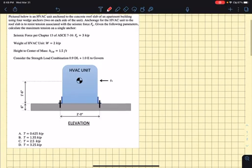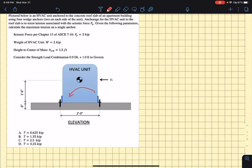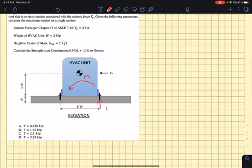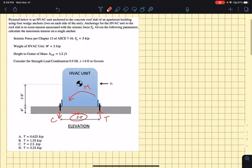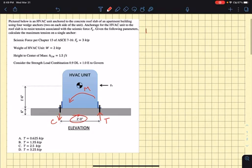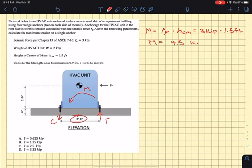So getting into it, this problem is fairly straightforward. We've got a moment here at the base, moment M, and that moment is due to that force F_p. That moment is going to result in a couple, which is going to be a tension and a compression on the other side. We're worried about the tension because the tension is what's going to pull up on the anchorage. We can calculate the tension using the lever arm here, d, the distance between the anchorage. But we've got to also account for the weight because the weight is going to help us out a little bit on the tension. So we're going to go ahead and calculate that moment. We've got that moment as equal to F_p times H_cm, height to the center of mass. It's equal to 3 kips times 1.5 feet, so that's equal to 4.5 kip-foot. Okay, so pause there.